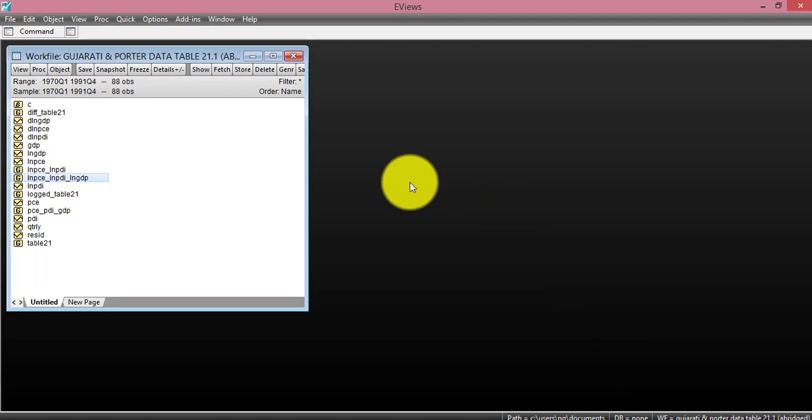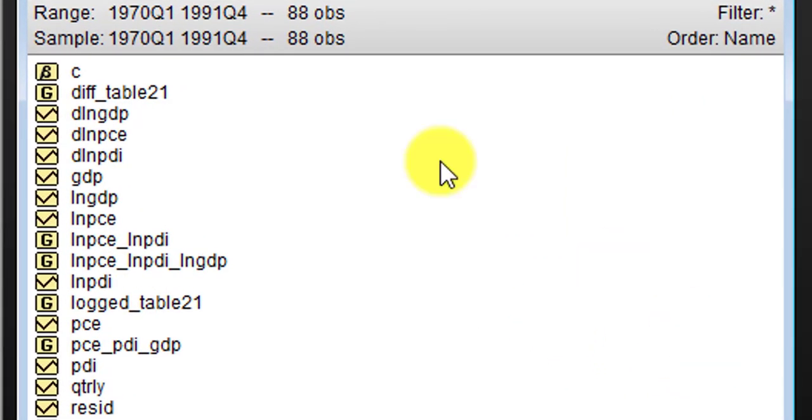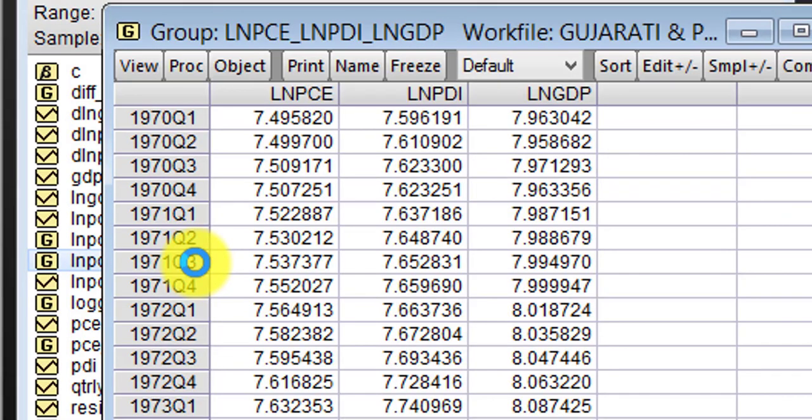I have my EViews already popped up, and in today's tutorial, I will be using these three variables: log of PCE, log of PDI, and log of GDP.